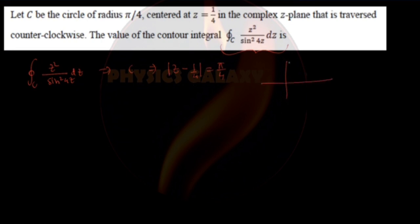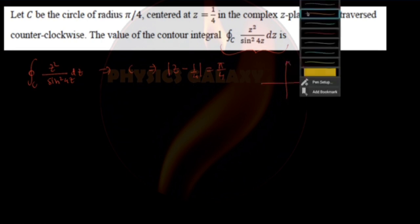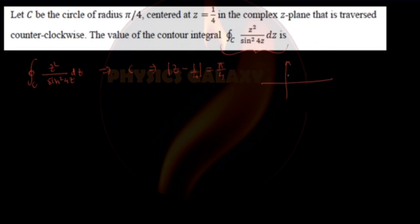So π/4 is the radius and 1/4 is the center of the circle. Let me draw the circle. You can see something like this - the center is at z = 1/4 and the radius is π/4.